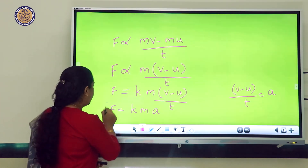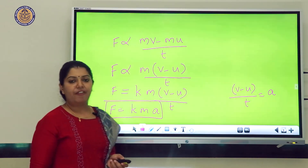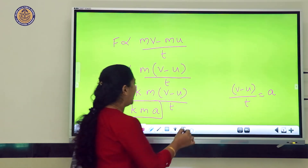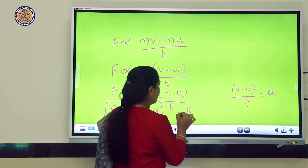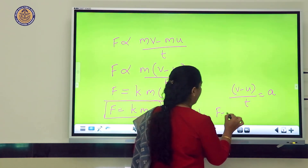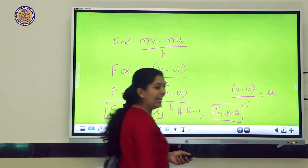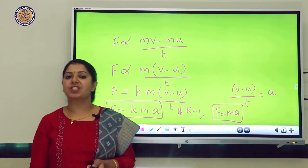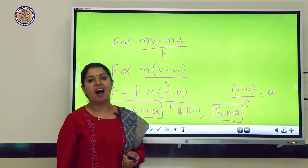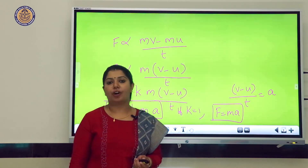This is the final expression from Newton's Second Law of Motion, where k is the proportionality constant. If k = 1, then F = MA. This is the final expression: F equals mass times acceleration, where M is mass and A is acceleration. This is the derivation of the Second Law of Motion.